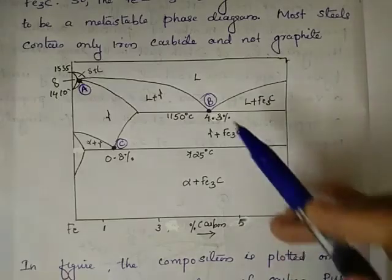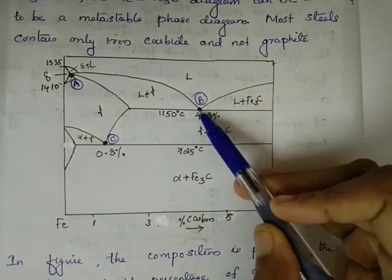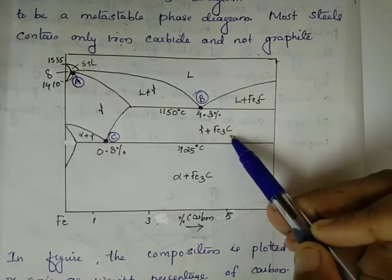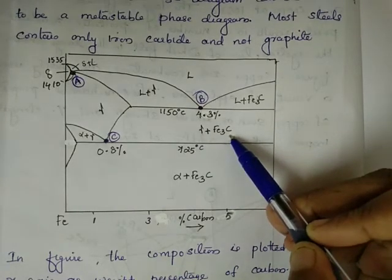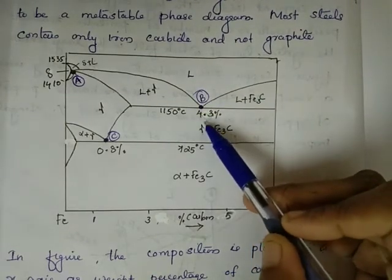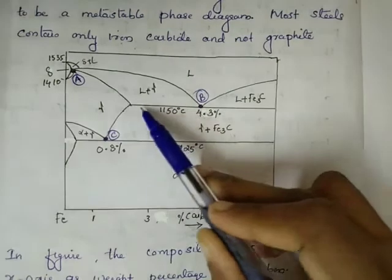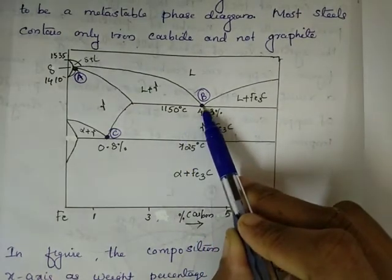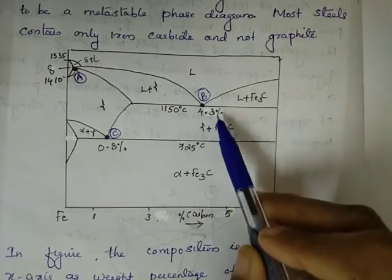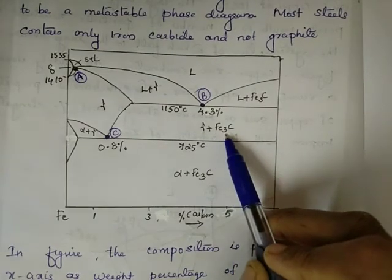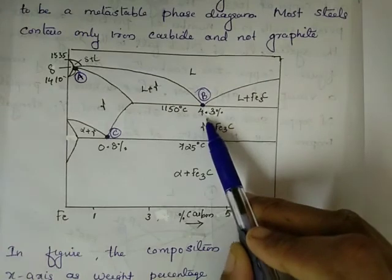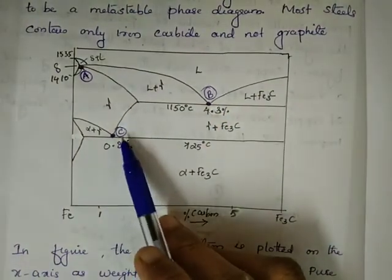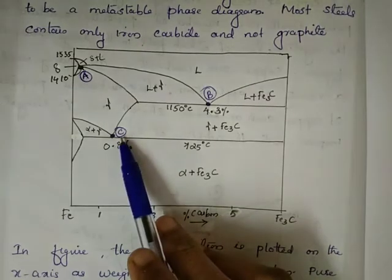The first important point is point B. At point B, the liquid changes to gamma plus Fe3C. This is a eutectic reaction. The reaction temperature is 1150 degrees Celsius. This is the eutectic line and eutectic point. At 1150 degrees Celsius, liquid equals gamma plus Fe3C. The eutectic composition is 4.3 percent carbon.